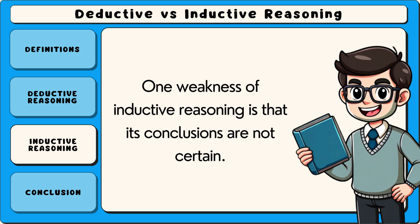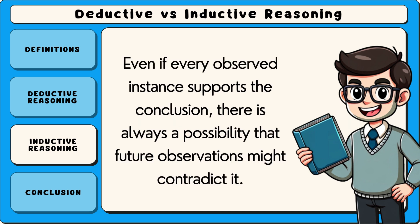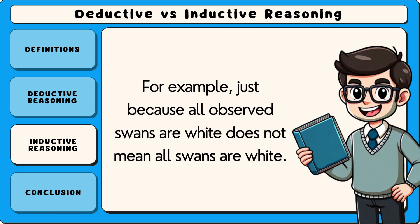One weakness of inductive reasoning is that its conclusions are not certain. Even if every observed instance supports the conclusion, there is always a possibility that future observations might contradict it. For example, just because all observed swans are white does not mean all swans are white.